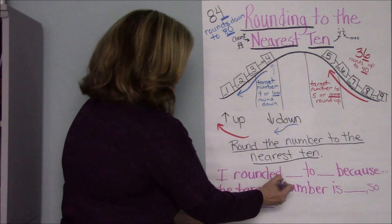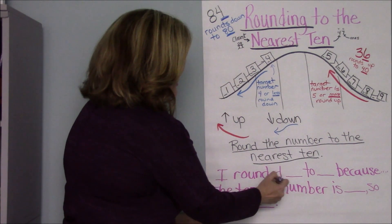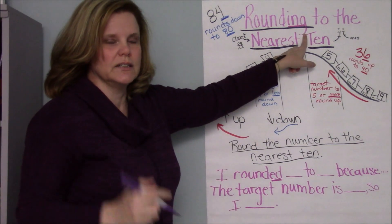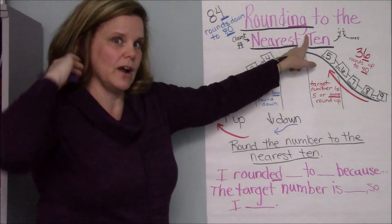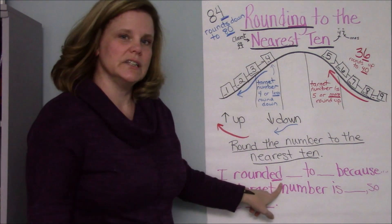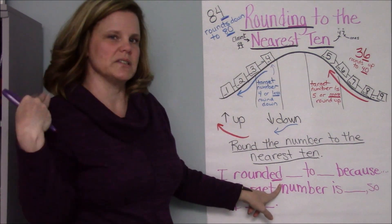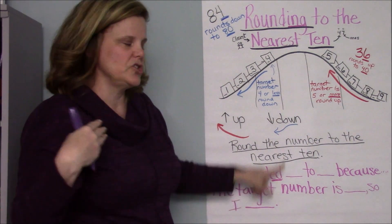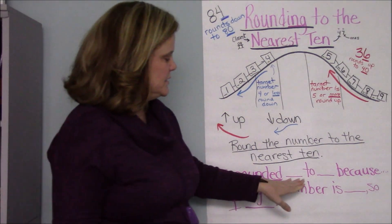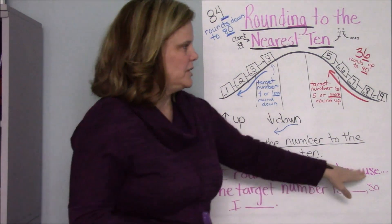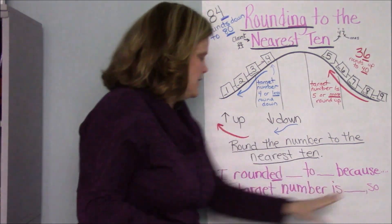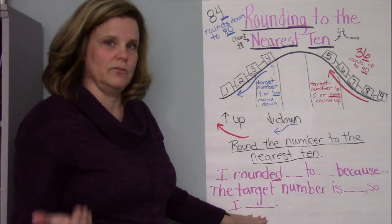One thing you need to notice here is that we've changed this and this. So here I said rounding because we're doing it right now, we're rounding. That's our action word. Down here I changed it to rounded because I already did it, past tense. So just a little change that I want you to notice and pay attention to.